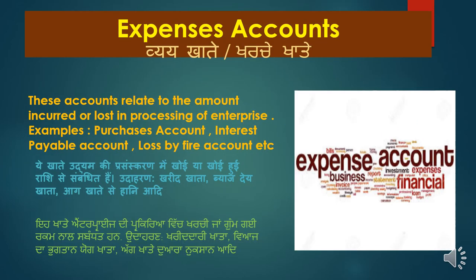Next is the expenses account. Kharche — money going out. These accounts relate to the amount incurred or lost in the processing of an enterprise. When a business carries out operations, money goes out. The business also faces various losses — fire loss, theft loss — and while profit may be earned, losses can also occur. All such losses and expenses are included under the expenses account.